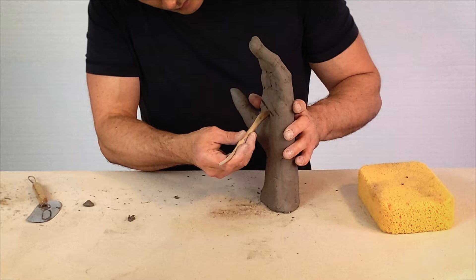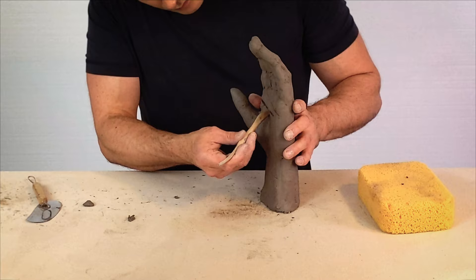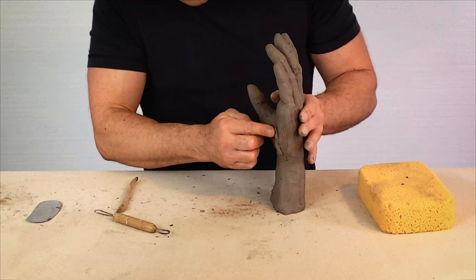Map out the creases of the palm. Build up the three pads out from the ball of the thumb, at the base of the fingers, and along the pinky side.